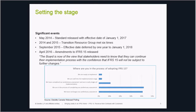Subsequently, the IASB and FASB jointly established the Transition Resource Group for Revenue Recognition (TRG), to support implementation and provide a forum to solicit, analyze, and discuss stakeholder concerns. The joint TRG met six times. As a result of ongoing discussions, the Boards became aware of requirements where differing interpretations were emerging. The Boards felt it appropriate to defer the effective date by one year — from annual periods beginning on or after January 1, 2017, to January 1, 2018.